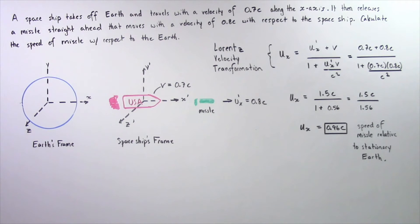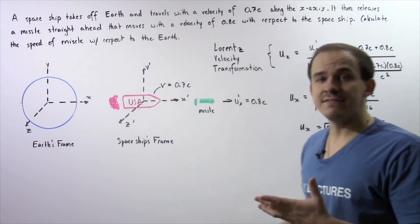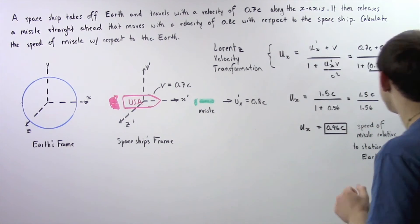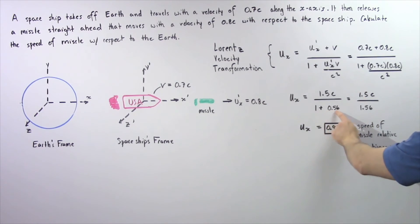Now let's calculate the bottom. We have 1 plus 0.7c multiplied by 0.8c divided by c squared. c multiplied by c gives us c squared, the c squareds will cancel, and 0.7 multiplied by 0.8 gives us 0.56. So 1 plus 0.56 gives us 1.56.